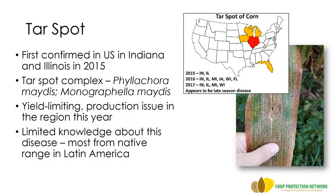So where did tar spot come from? Tar spot actually has been known in Latin America for about 30 years now. However, it's a recent arrival here in the U.S., being first found in Indiana and Illinois in 2015. Tar spot is caused by the fungus Phyllachora maydis. However, there's also a tar spot complex, which includes Phyllachora maydis and the second fungus, Monographella maydis. I'll talk a little more about where we stand in terms of the actual tar spot complex in the upper Midwest in a slide or two.